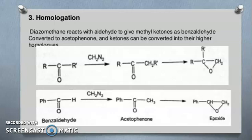Homologations. Diazomethane reacts with aldehydes to give methyl ketones, as benzaldehyde is converted to acetophenone. And ketones can be converted into their higher homologues. You can see in this reaction.